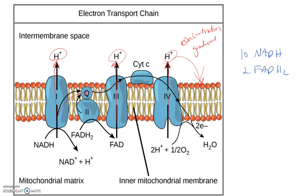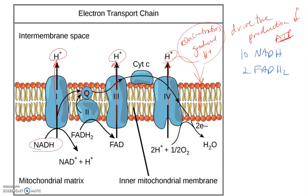What's occurring is we're generating a concentration gradient — a proton gradient — with a buildup of protons on one side of the membrane. Diffusion says these protons want to move from where they're most concentrated to where they're least concentrated, but they can't directly cross the membrane. This concentration gradient is going to be used to drive the production of ATP. It's the passage of electrons through the electron transport chain that is creating this proton gradient.